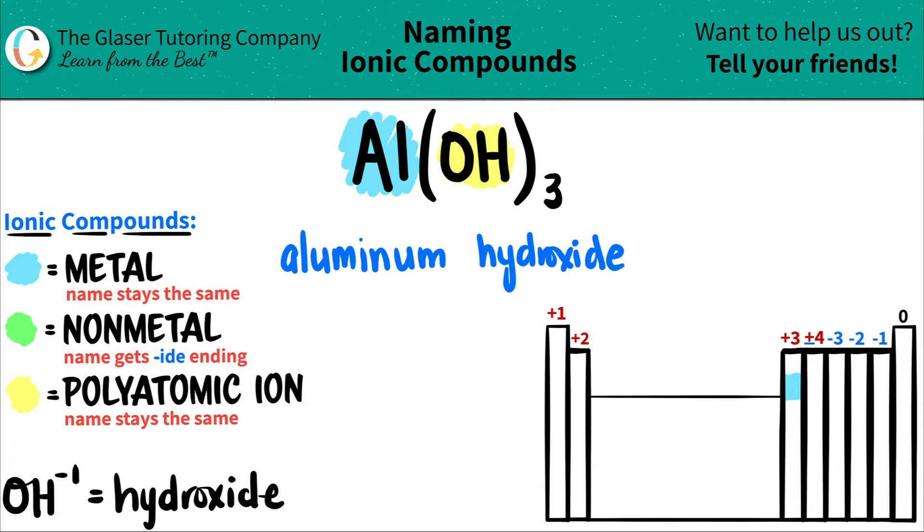So we do not need a Roman numeral. So we're done. So I could just box this off guys. So Al(OH)3 is just aluminum hydroxide. And there you go.